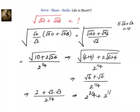2 power 1/4 into 3 power 1/2. So this is the square root of √50 plus √48.